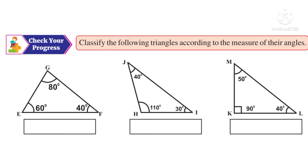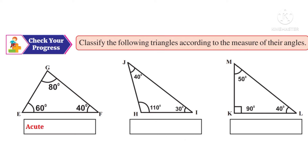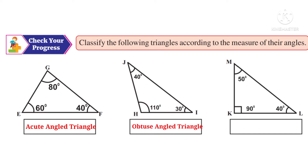Now let us do 'Check Your Progress' — classify the following triangles according to the measure of their angles. In the first figure, the angles are 40°, 60°, and 80° — all are less than 90°, so all are acute angles — it is an acute angled triangle. In the second figure, angle H is 110°, which is greater than 90° — one obtuse angle — so it is an obtuse angled triangle. In the third figure, one angle K is 90° — one right angle — so it is a right angled triangle.